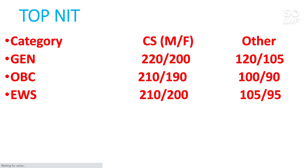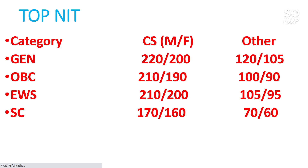A reminder that 'other branch' means the lowest possible branch available at that NIT. For specific branches like EC, EEE, or Mechanical, you can comment and I will try to give the cutoff marks. For a detailed analysis of marks versus percentile versus category rank, check the i-button or description box. For SC category at top NITs: 170 for male and 160 for female for CS, and 74 for male and 64 for female for other branches. For ST: 150 male, 140 female for CS, and 60 male, 50 female for other branches.